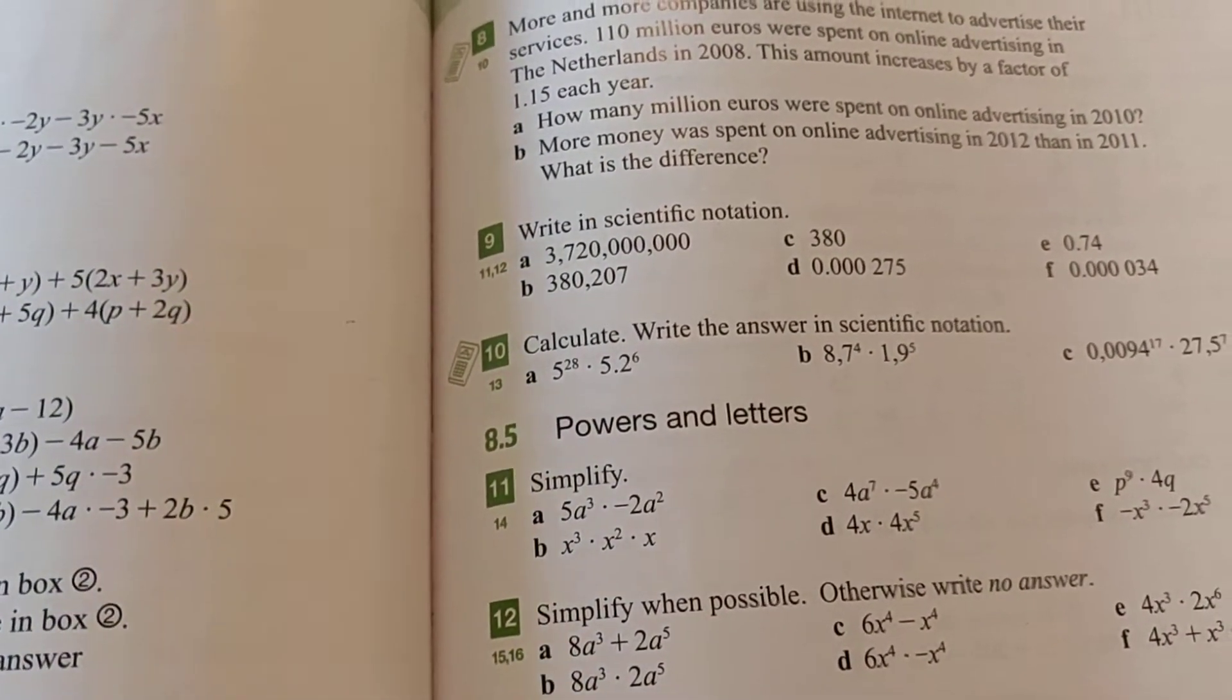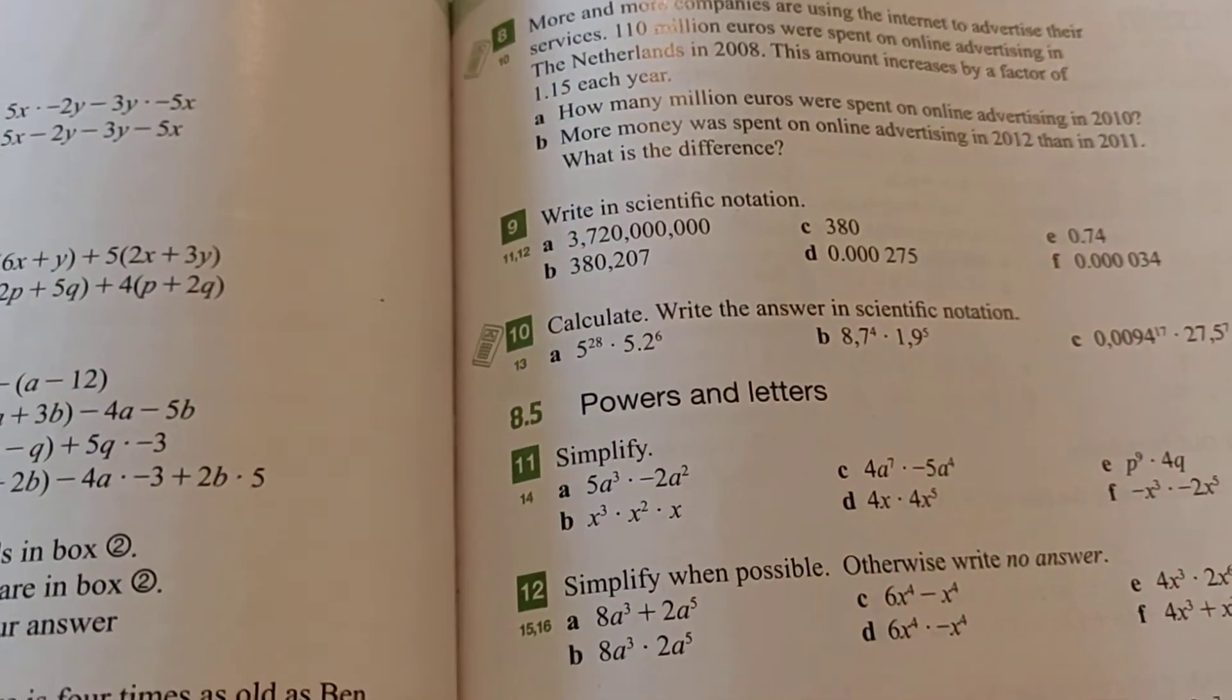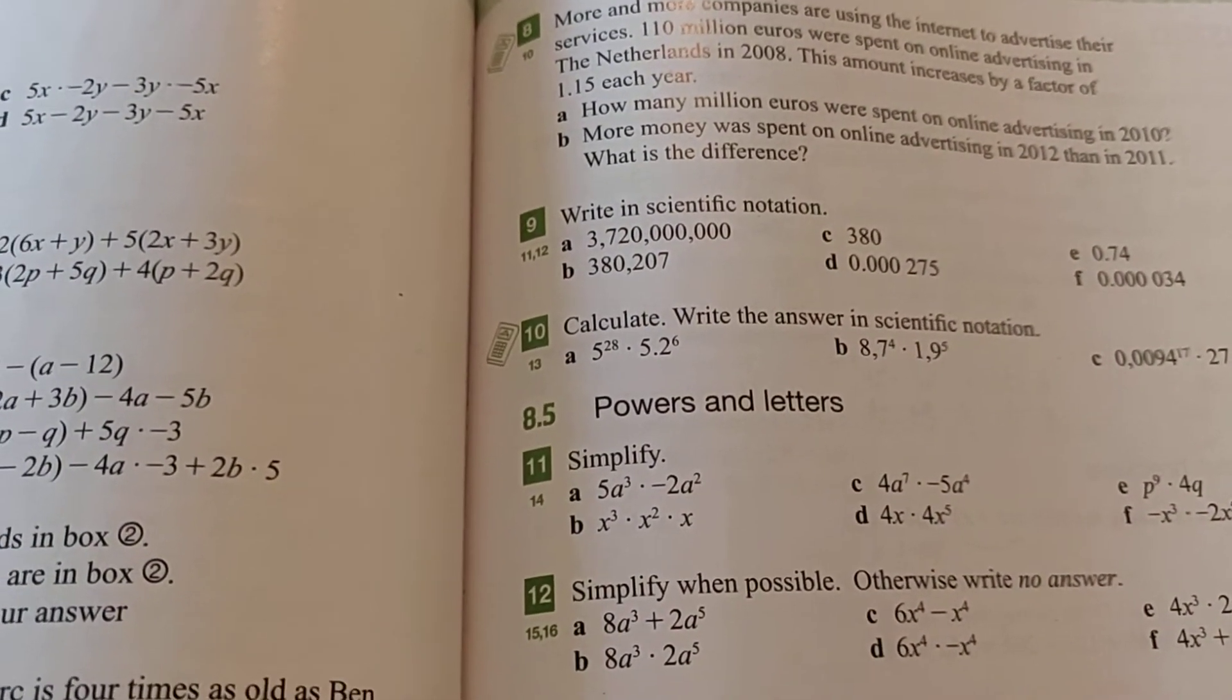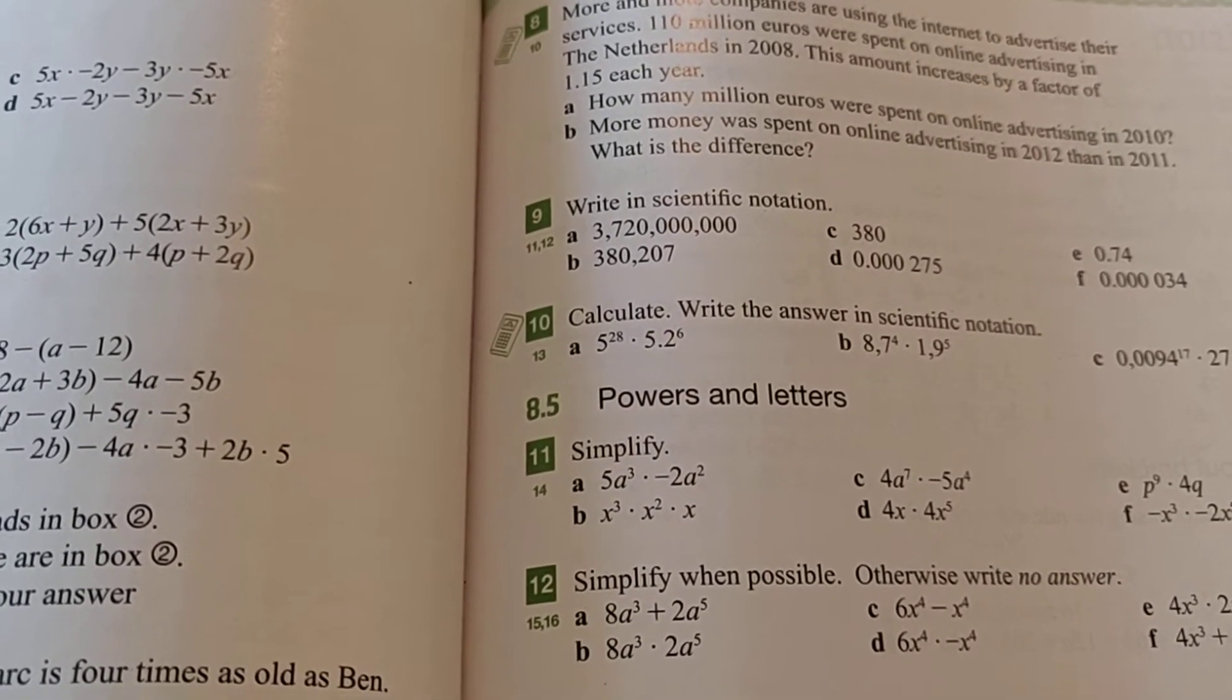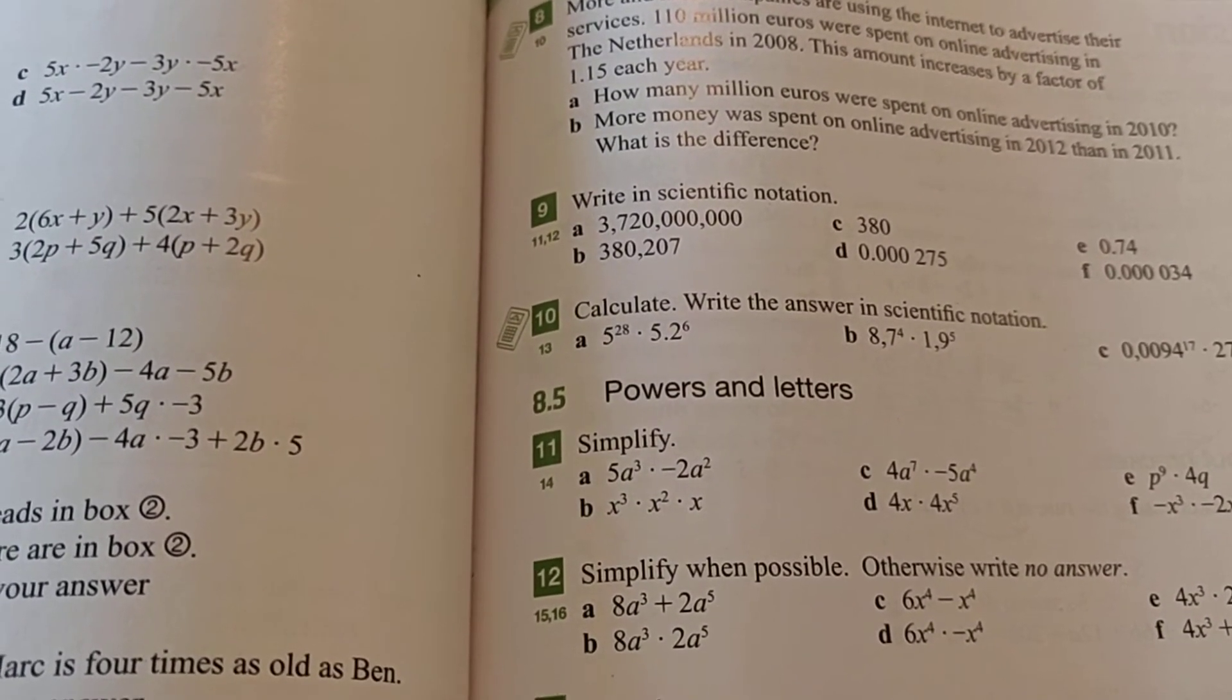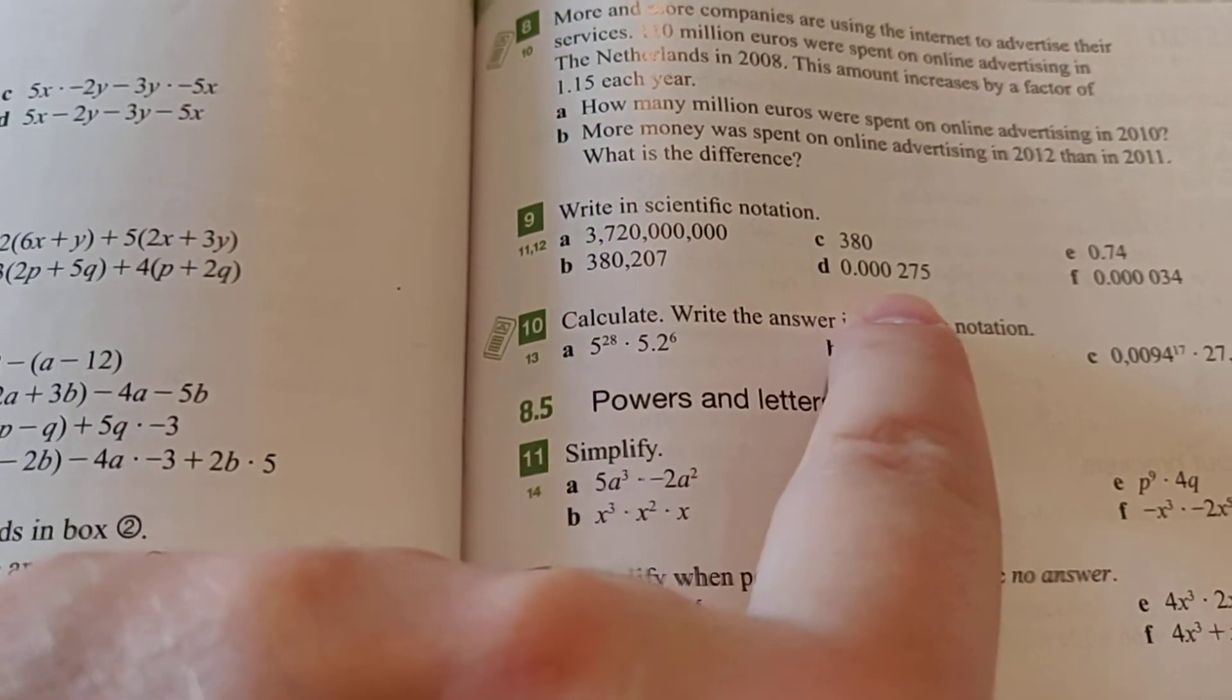And one thing you might notice is that they use a lot of commas here, see that? They use that to separate thousands, like if you have three thousand, you get three comma and then three zeros. So don't get confused with a point, like that there's a number behind the point, like over here, 0.000.